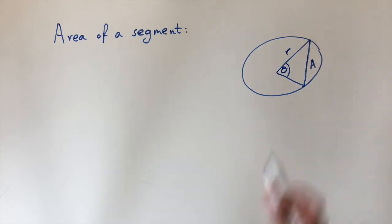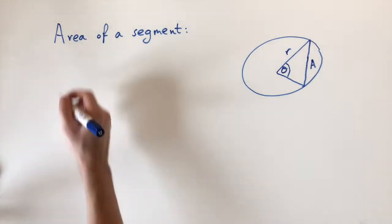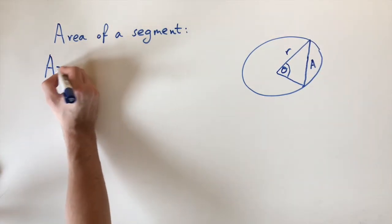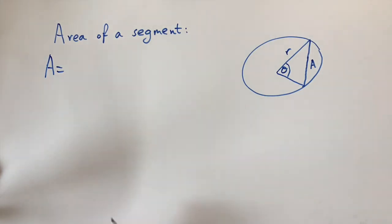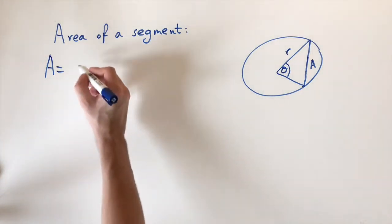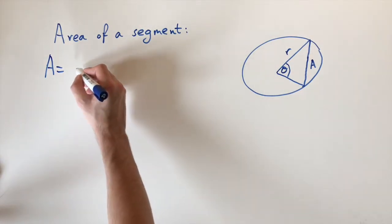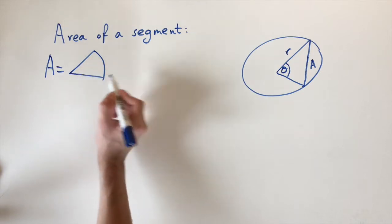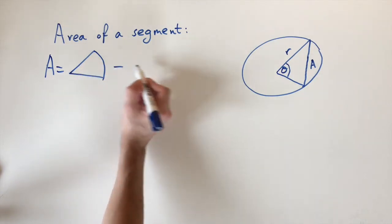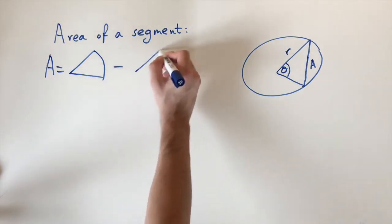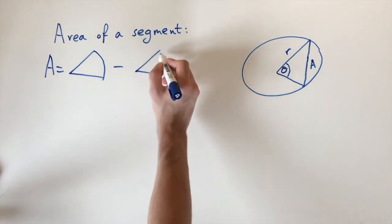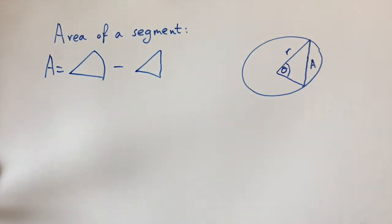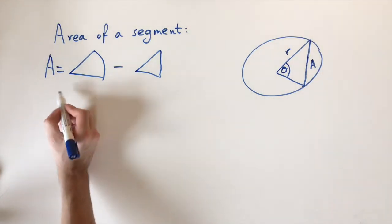So I'll write A for the area. The approach is: take the area of the sector, subtract the area of the triangle, and what we're left with is just the segment.